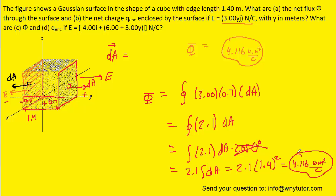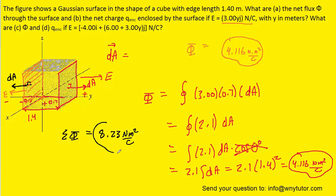Adding the two fluxes together, the total electric flux through the Gaussian surface equals 8.23 N·m²/C. This is the correct answer to part A.